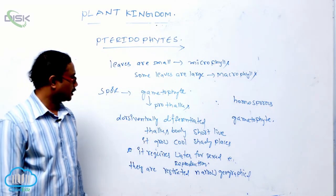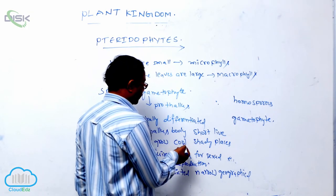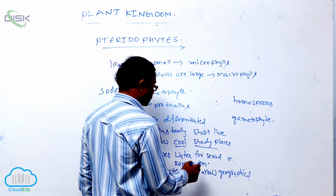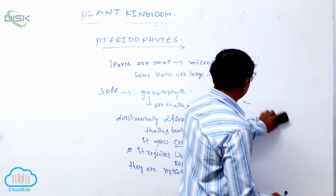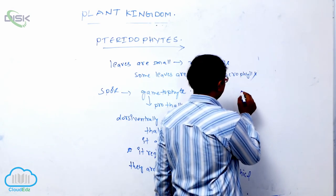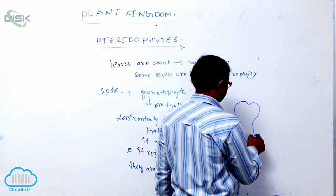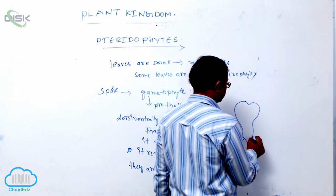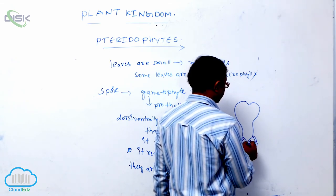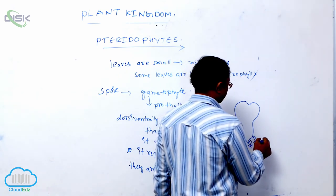Water is available where these gametophytes live. It means they require water for sexual reproduction and grow in cool and shady places. In the leafy gametophyte, it is known as the prothallus. It is attached to the substratum or soil by multicellular hair-like structures known as rhizoids.